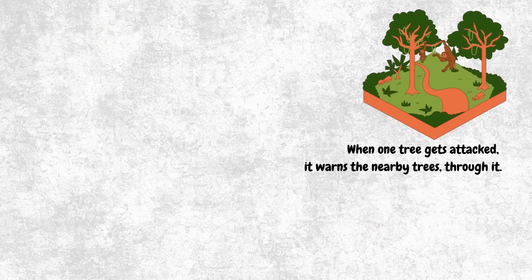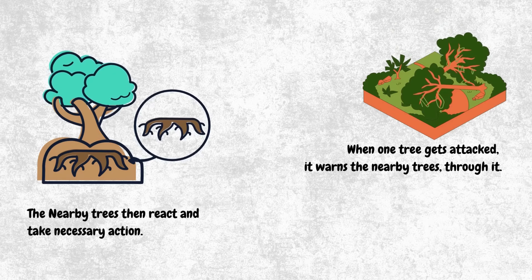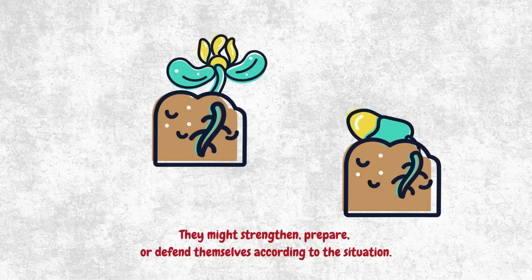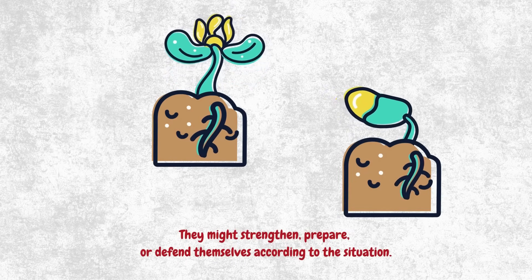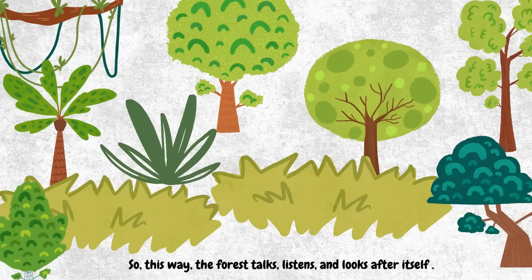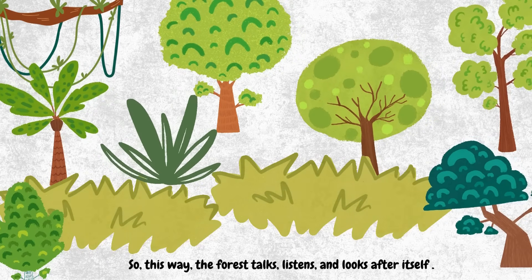When one tree gets attacked, it warns the nearby trees through it. The nearby trees then react and take necessary action. They might strengthen, prepare, or defend themselves according to the situation. So this way, the forest talks, listens, and looks after itself.